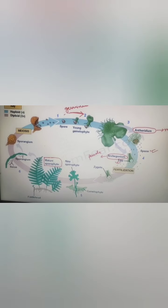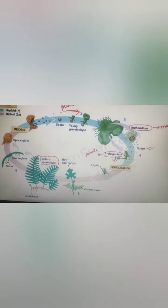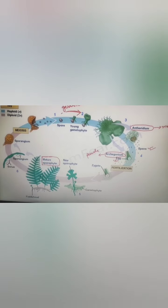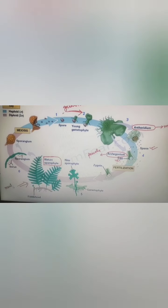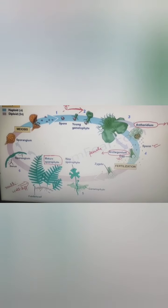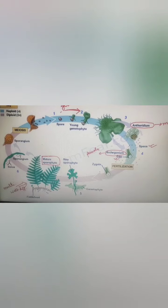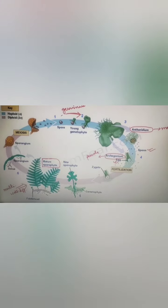In pteridophytes, the sporophyte is the dominant stage because it is the large leafy plant we see around us. The characteristics that make it dominant are: the sporophyte is multicellular, well-differentiated into roots, stems, and leaves, and it is long-lived. So the sporophyte is the main stage and dominant phase of the life cycle.